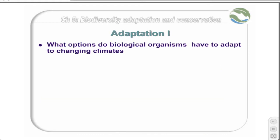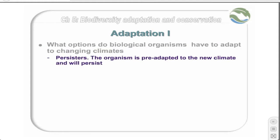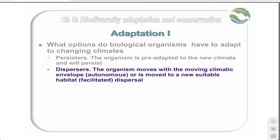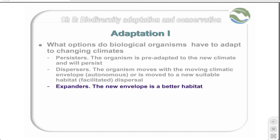From the perspective of a biological organism, there are several ways a species may adapt to the changing climate. Firstly, they may be persisters — that is, they may be pre-adapted to the new climate and will therefore persist in the new climatic envelope. Dispersers are organisms which will move with the climatic envelope; in other words, they will track the climate. They may do this autonomously, or they may be facilitated dispersers that require human assistance to find their new habitat. Some species will benefit from changed climatic conditions and their range will grow — these species are termed expanders.